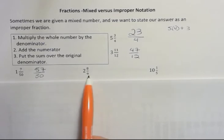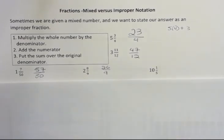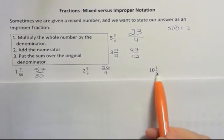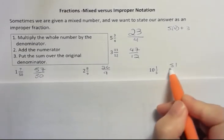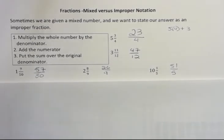In the second one, 2 times 9 is 18 plus 8 is 26, and that goes over the original denominator of 9. 5 times 10 is 50 plus 1 is 51 over 5. So that's changing a mixed number to an improper.